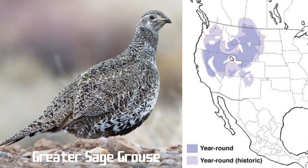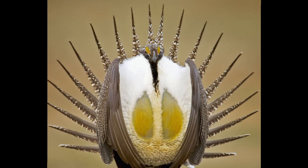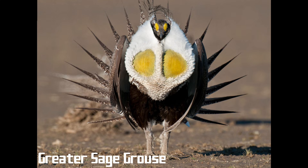If you find yourself in sagebrush country in the spring at dawn in western North America, you may hear a strange bubbling sound and maybe even a stranger sight. Dozens of male greater sage grouse puff up their chests and fan their starburst tails. They inflate bulbous yellow air sacs and thrust with their heads to produce weird pops and whistles. It is quite an extraordinary sight. Unfortunately, habitat fragmentation and developments have caused severe declines for this bird species.